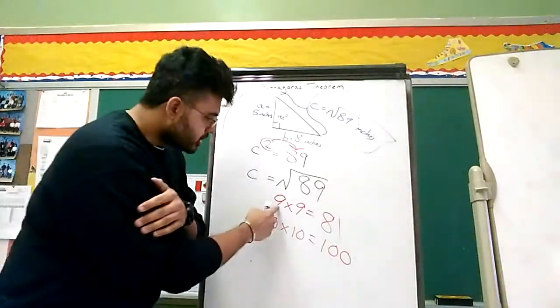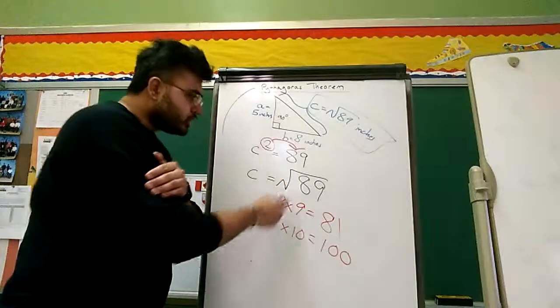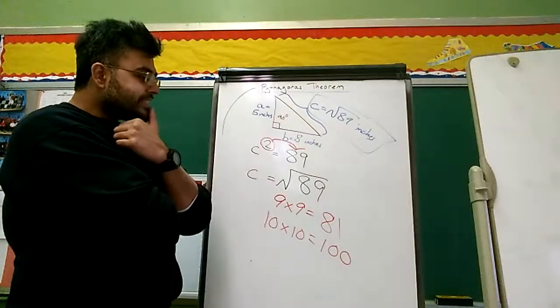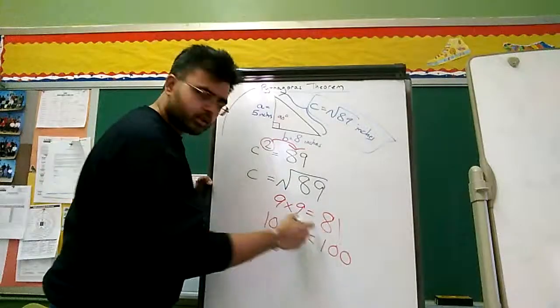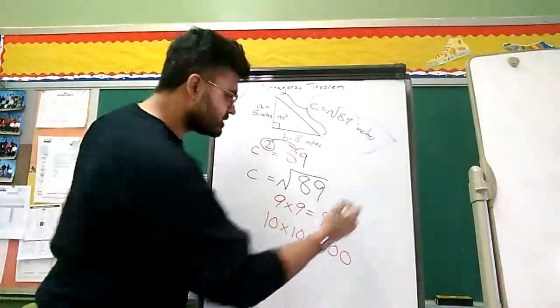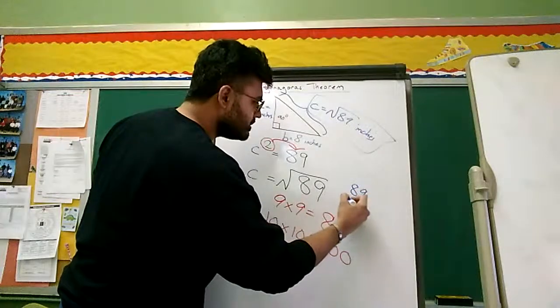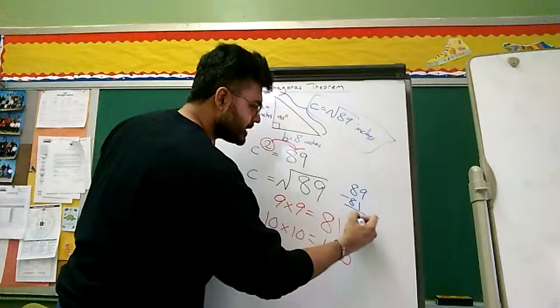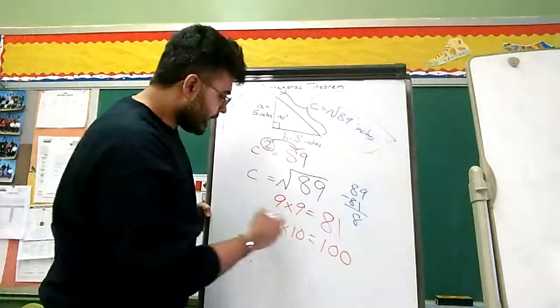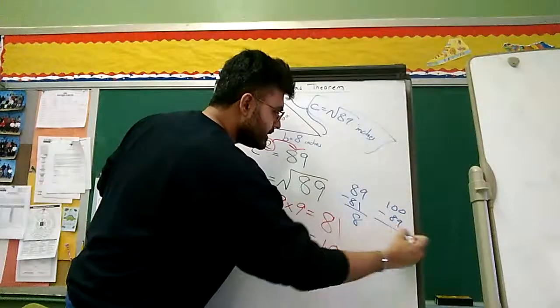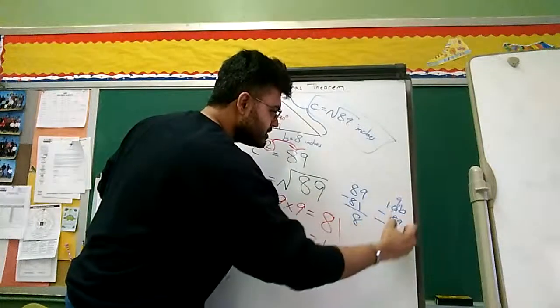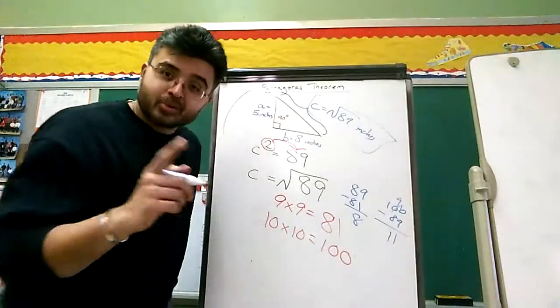Let's see. This is what we're going to do. 89, 81. What's the difference? 89 minus 81. That's 8, right? How about 100? What's 100 minus 89? 100 minus 89 is 11. Which number is closer? Right there.